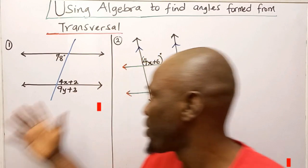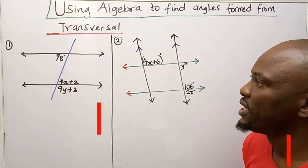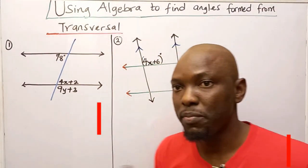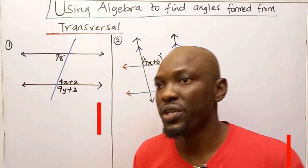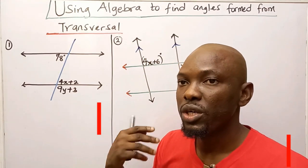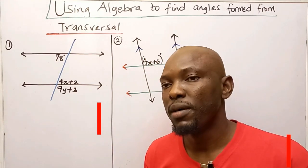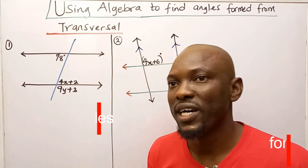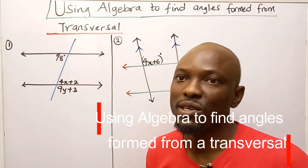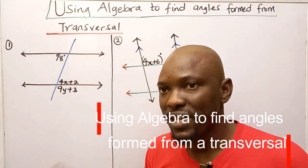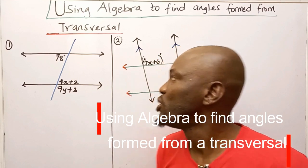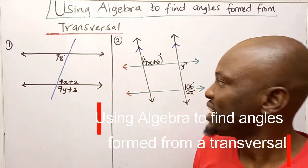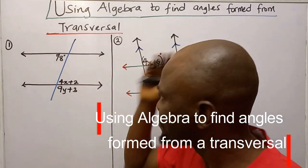There are two problems on the board and we're going to use everything you've learned in my previous video: corresponding angles, consecutive interior angles, alternate interior angles, alternate exterior angles, vertically opposite angles, and straight line angles to solve the two problems on the board.